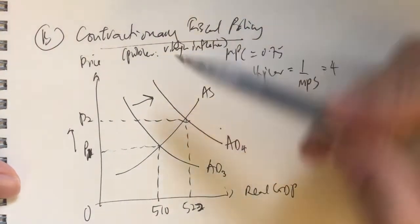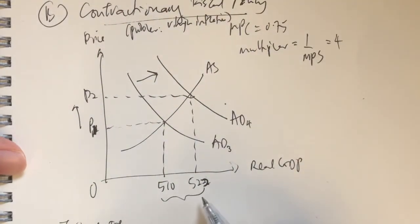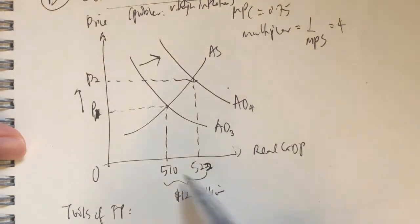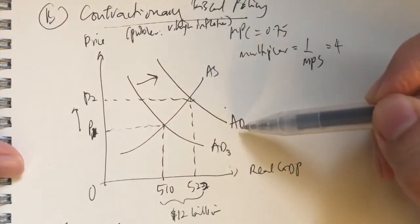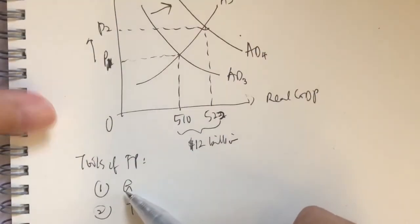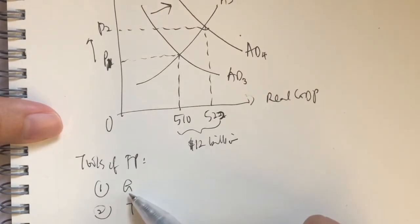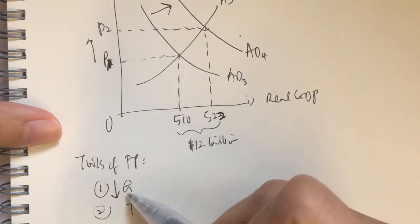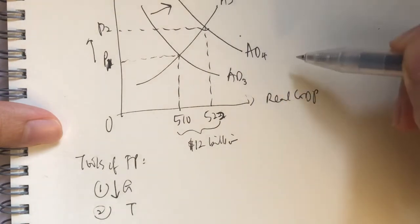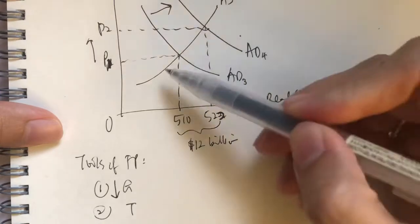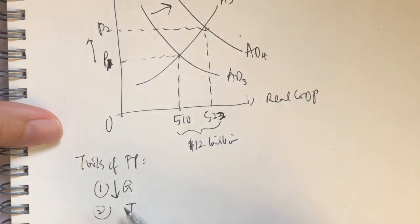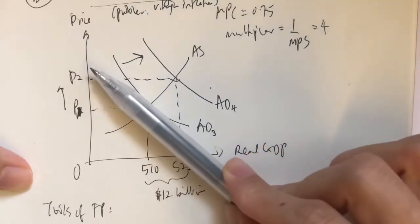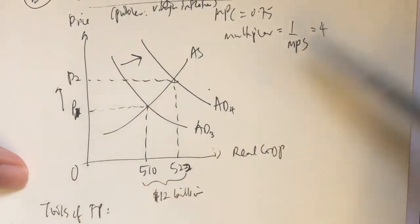So what does the government want to do? How much is the difference here? Y2 minus 510 — there's a change of 12 billion. This is the amount of positive GDP gap that we would like to reduce. So we would want to shift the aggregate demand curve back to the left. G, or government spending, is a direct component of aggregate demand. So what we want to do is reduce G. If you reduce G, the aggregate demand curve — which is C plus IG plus G plus XN — will shift to the left. Now the question is how much? We cannot reduce G by 12 because due to the multiplier, 12 times 4 would be much more. So we need to reduce aggregate demand by a smaller amount first.